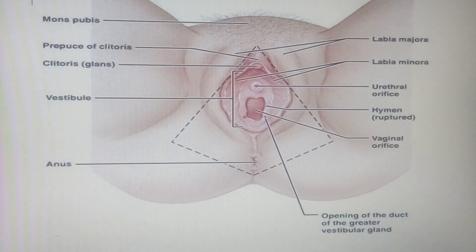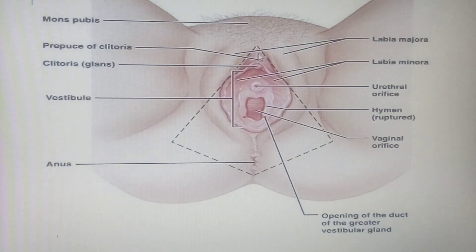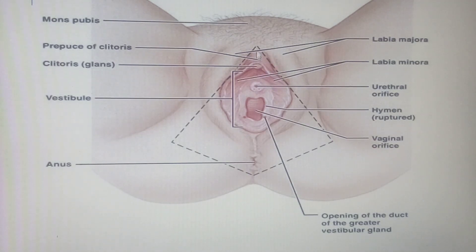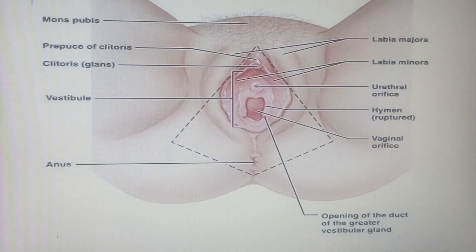The clitoris is endowed with a lot of nerves so that it is highly erogenous. Some people call it the C-spot. The clitoris we see here is just the tip of the iceberg. Over the clitoris there is a fold of skin called the hood or prepuce of the clitoris, just like the foreskin in males.